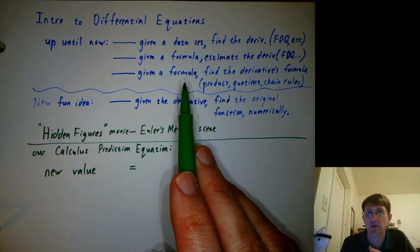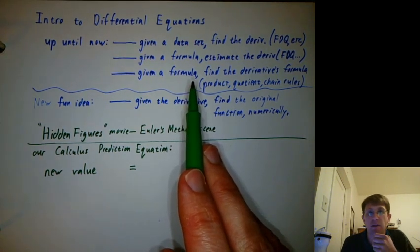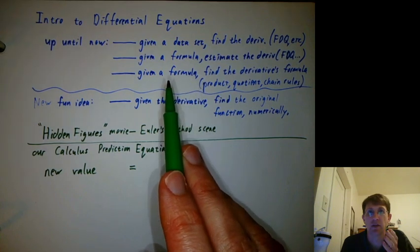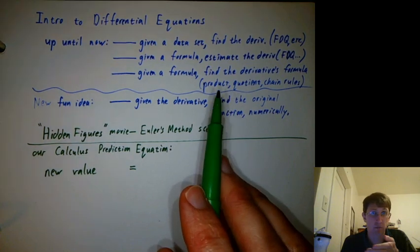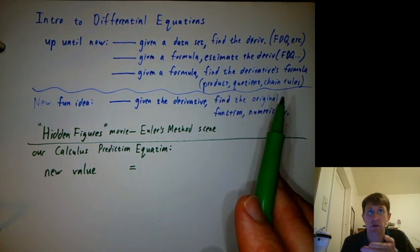Then, once we learned to do the power rule, the sines and cosine derivative formulas, we were playing the game of: given a formula, find a formula for the derivative. And there's the product rule, quotient rule, chain rule, etc.